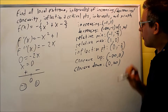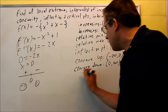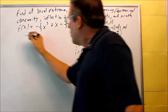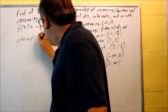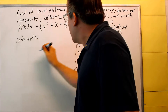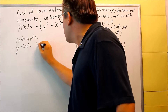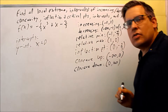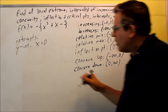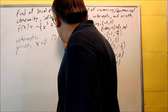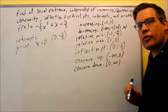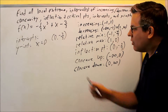Now let's find the intercepts — this is a review from pre-calculus. For the y-intercept, we put zero in for x, which we've actually already done: the answer is 0 comma negative two-thirds. So that point is both the inflection point and the y-intercept — that's where it crosses the y-axis.